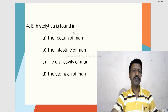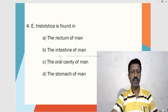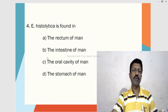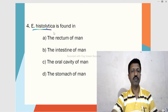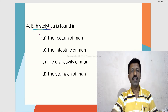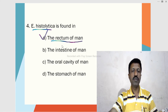Fourth MCQ: Entamoeba histolytica is found in — A. The rectum of man, B. The intestine of man, C. The oral cavity of man, D. The stomach of man. Entamoeba histolytica is found and lodged in the rectum of man.